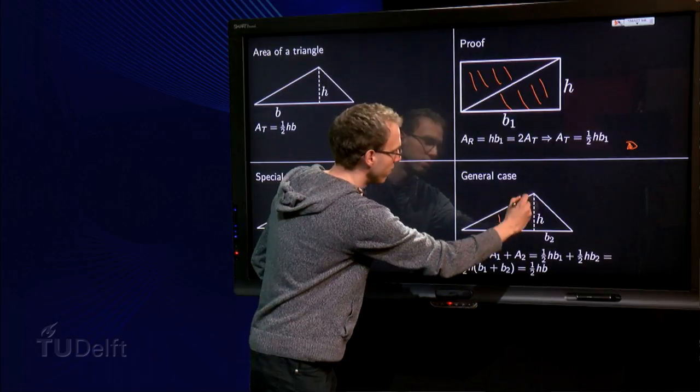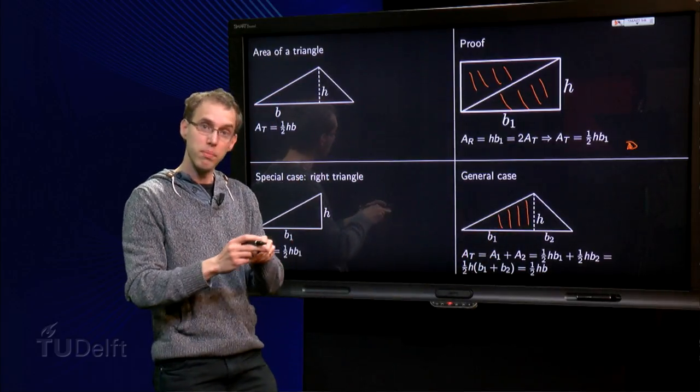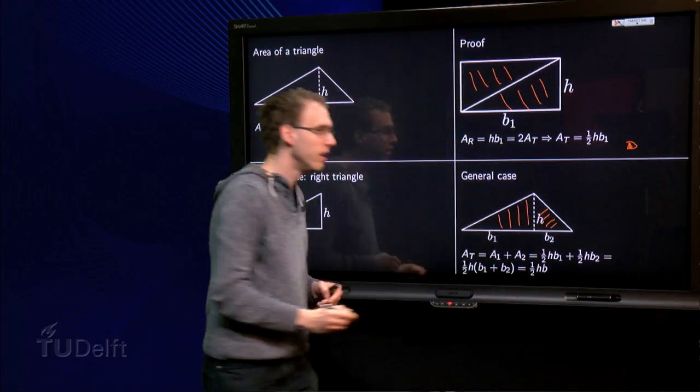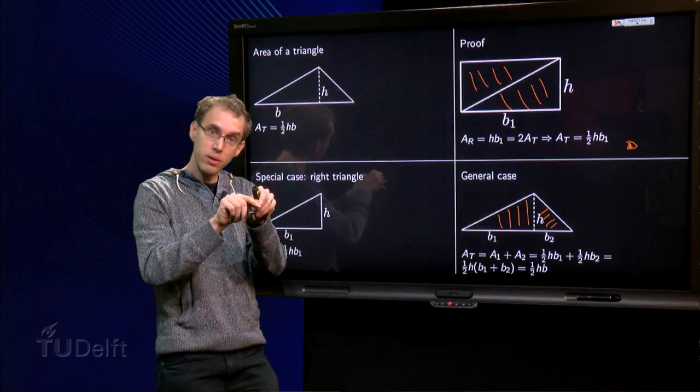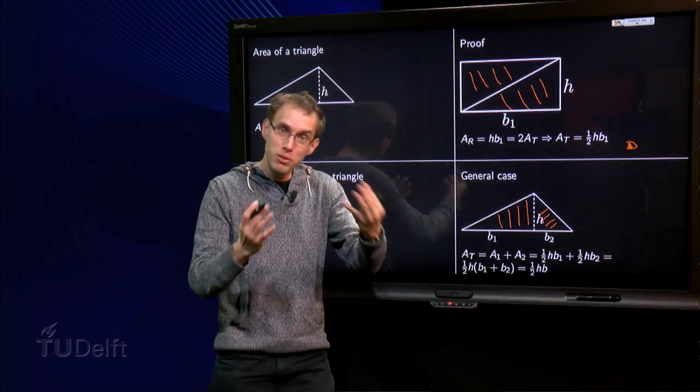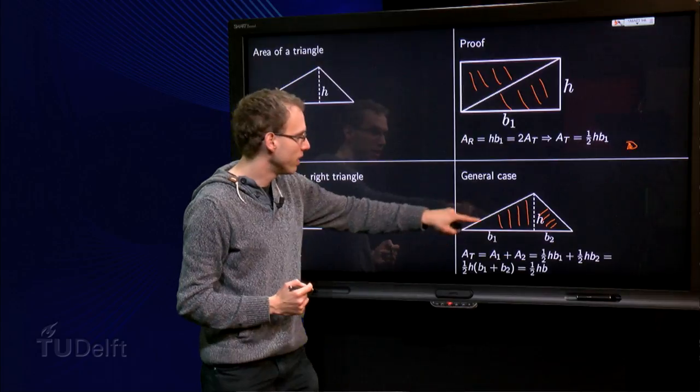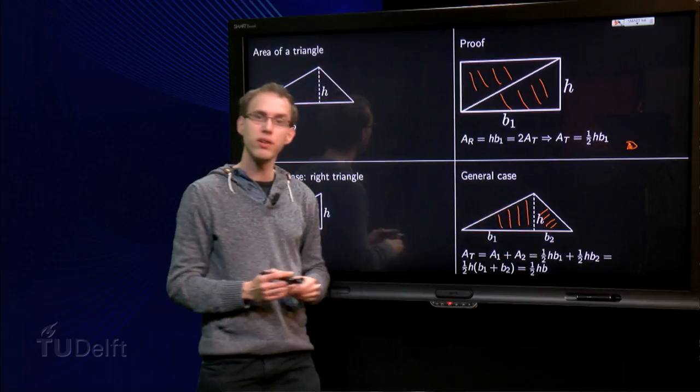First one here with height h and base b1 and a second one over here with height h and base b2. But now we can use our previous result, which says that the area of the big triangle equals the first one plus the second one, of course.